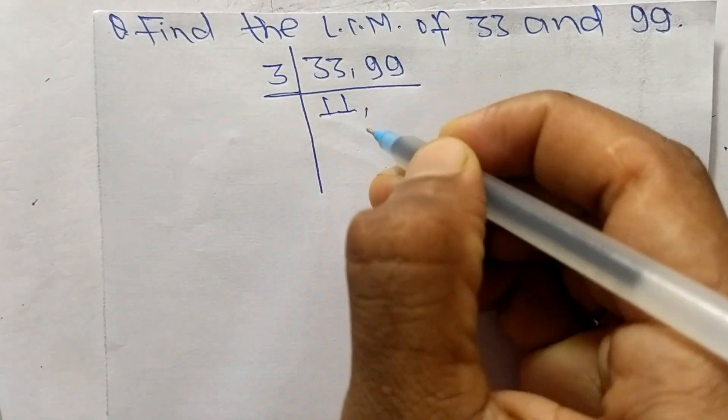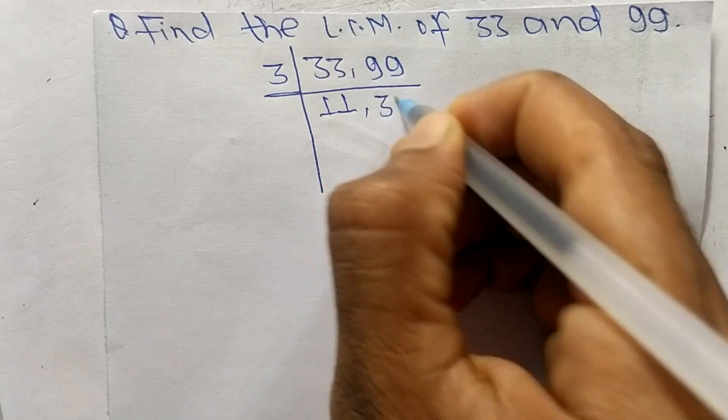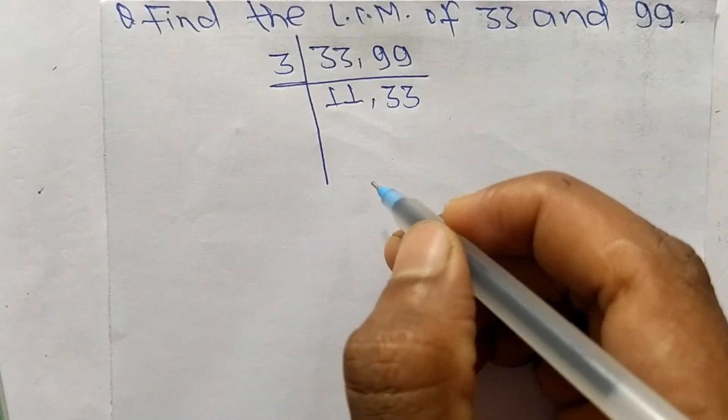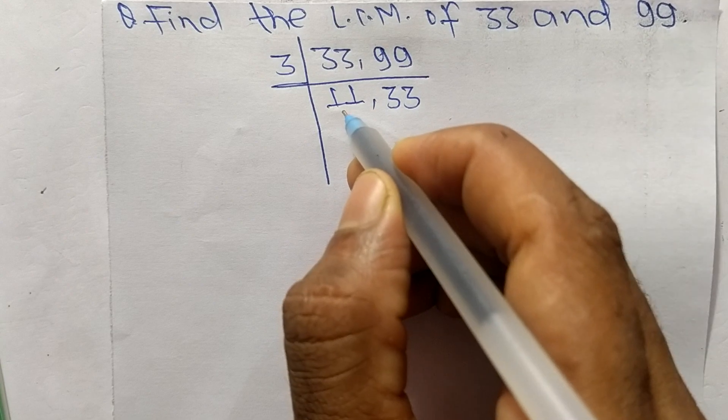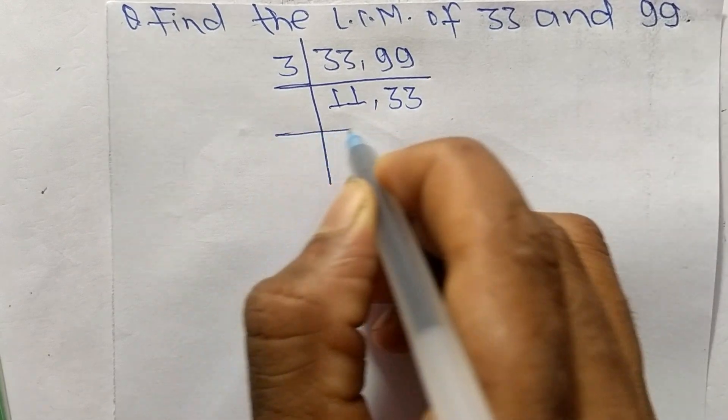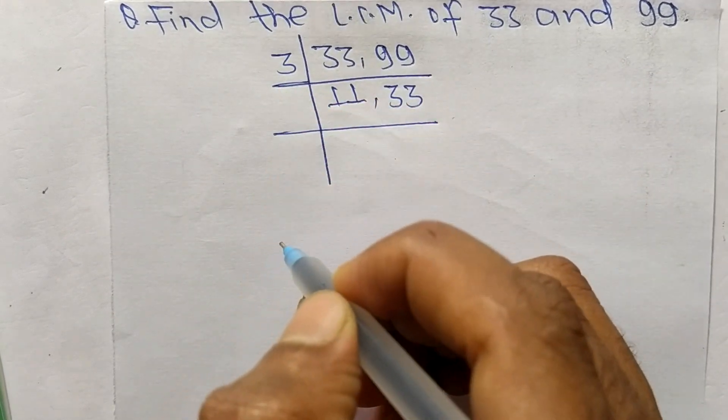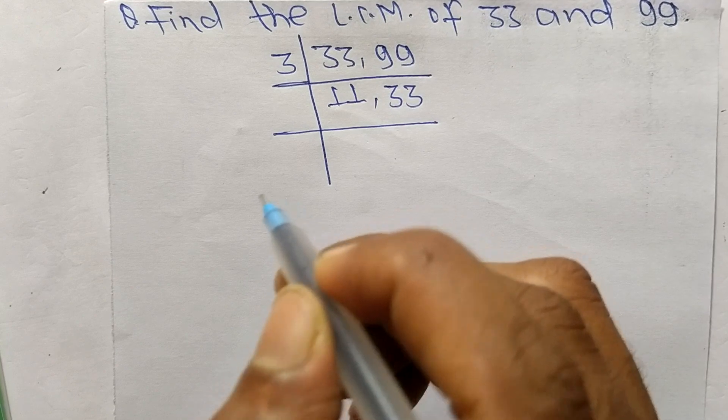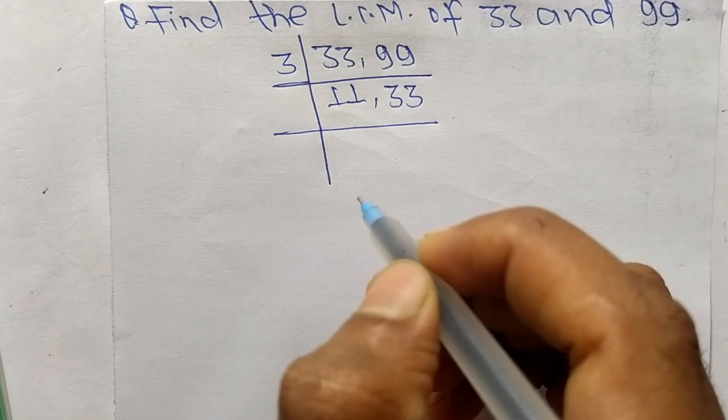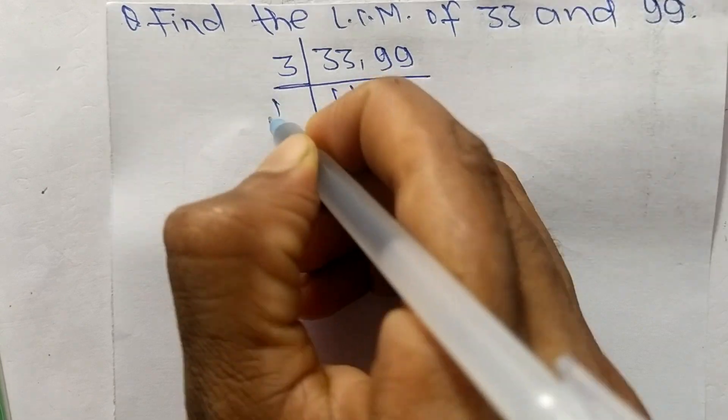3 times 11 means 33, 3 times 33 means it is 99. So now 11 and 33 are not exactly divisible by 3, so we choose the number greater than 3 that can exactly divide 11 and 33, so the number is 11.